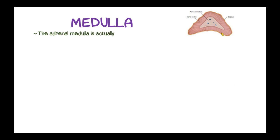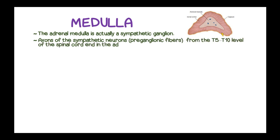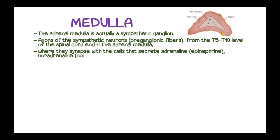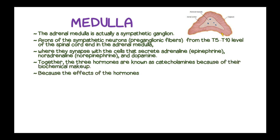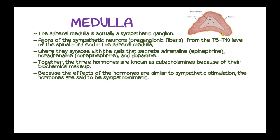Moving to the medulla, which is the innermost layer — the adrenal medulla is actually a sympathetic ganglion. The axons of the sympathetic neurons, known as preganglionic fibers, from the T5 to T10 levels of the spinal cord end at the adrenal medulla. This is where they synapse with the cells that secrete adrenaline, noradrenaline, and dopamine. Together, these three hormones are known as catecholamines because of their biochemical makeup.